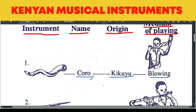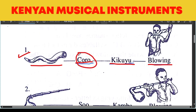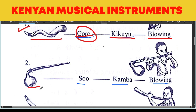The first one here is Shoro. Shoro is a horn from the Kikuyu. The medium of playing this horn is you blow it — just blowing. This is the position, how you blow the Shoro. We also have a Shoro from the Kamba people, played by blowing. This is the position, how you hold it when playing it.